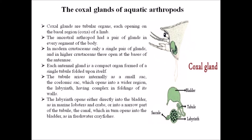Each antennal gland is a compact organ formed of a single tubule folded upon itself. The tubule arises internally as a small sac — the coelomic sac — which opens into a wider region called the labyrinth, having complex infoldings of its wall. The labyrinth opens either directly into the bladder, as in marine lobsters and crabs, or into a narrow part of the tubule called the canal, which in turn opens into the bladder, as in freshwater crayfishes. This diagram shows the coxal gland having a bladder, tubule, labyrinth, and saccule structure.